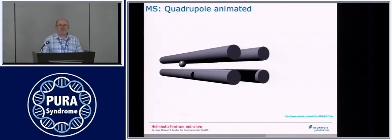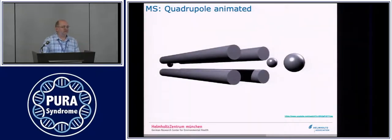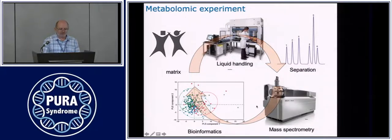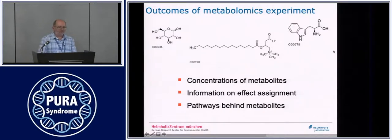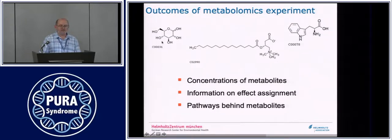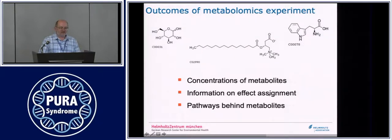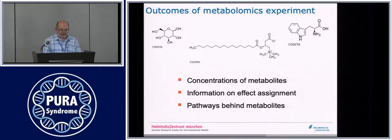So once again: we have a system — sample, sample preparation, separation, mass spectrometry. What are the outcomes of such metabolomics experiments? We are measuring not only one molecule; I used sugar as an example, but we can measure many others like amino acids and lipids. At the same time, we get information about the concentration of metabolites and its assignment to a given effect — for example, health or disease. The real work starts when we look at where the molecules are located in specific pathways and what processes surround them, done using bioinformatic methods.